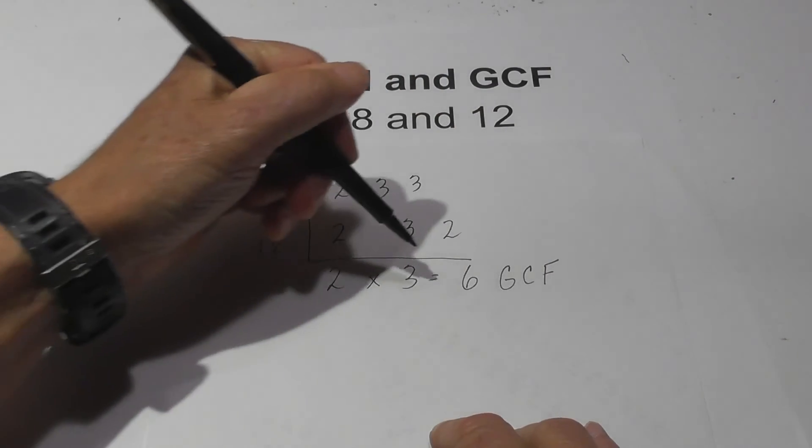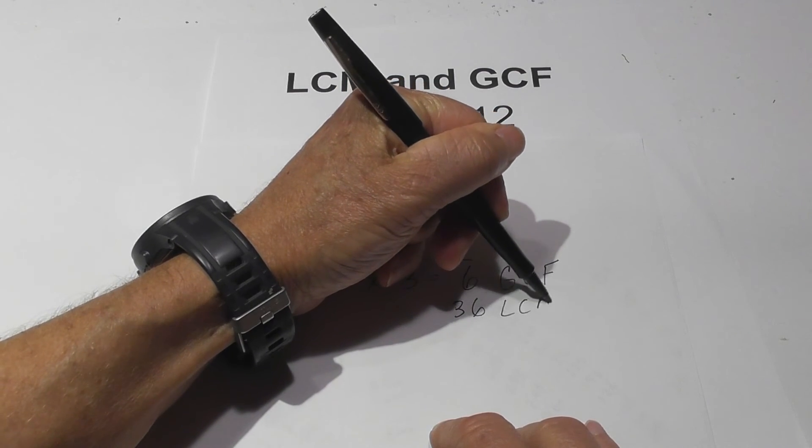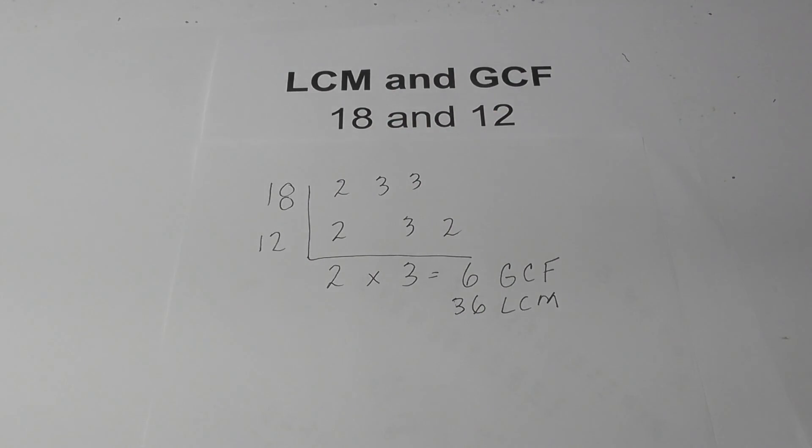So in summary the greatest common factor is 6 and the LCM is 36. Thanks for watching and MooMath uploads a new math and science video every day. Please subscribe and share.